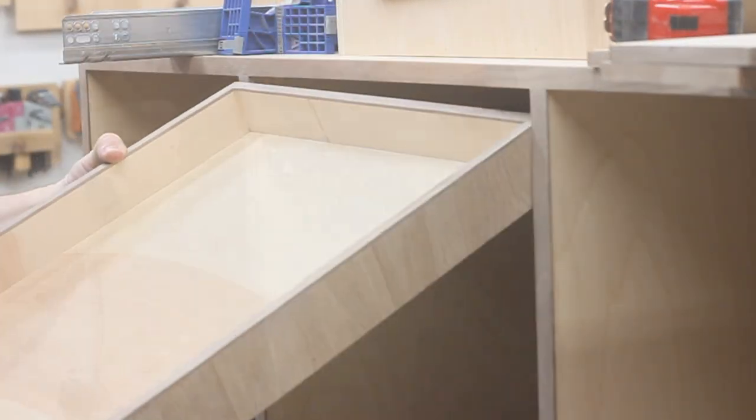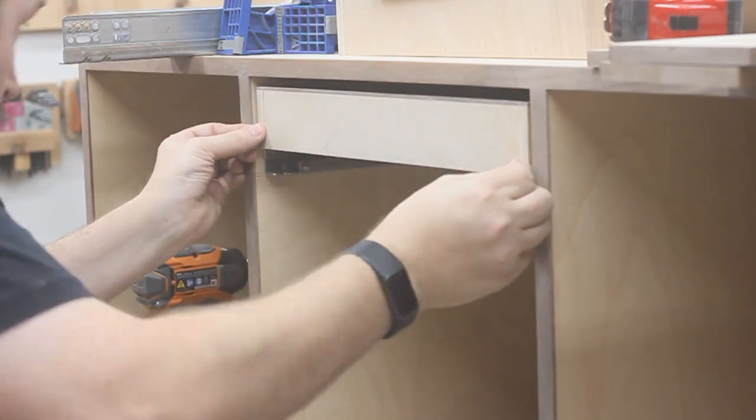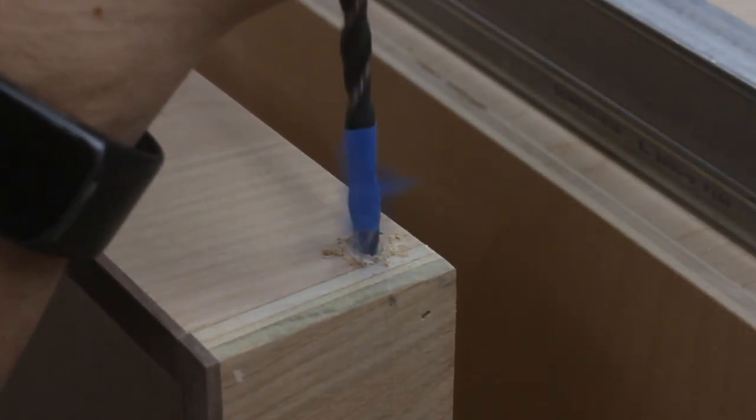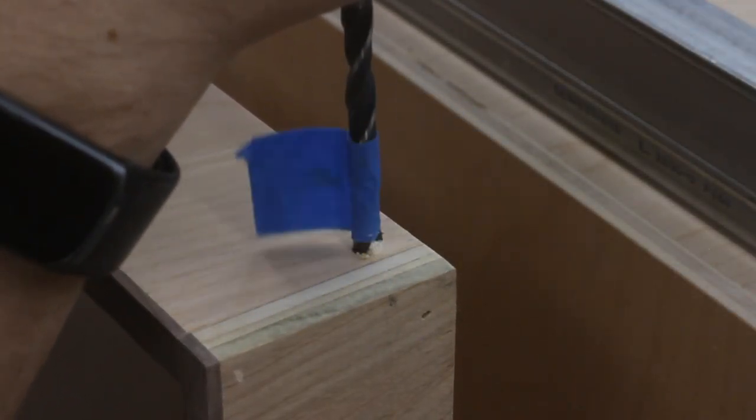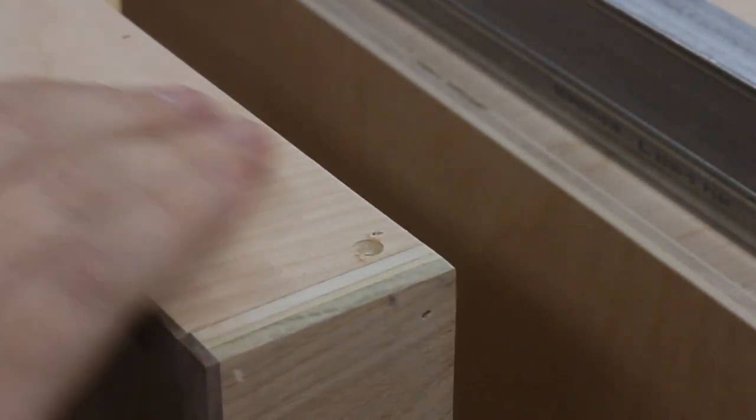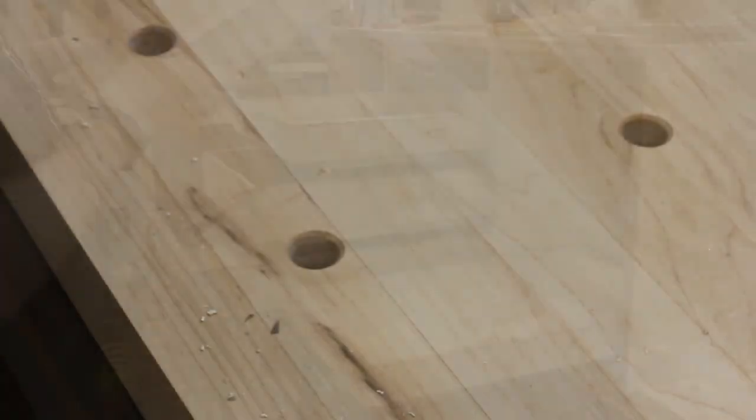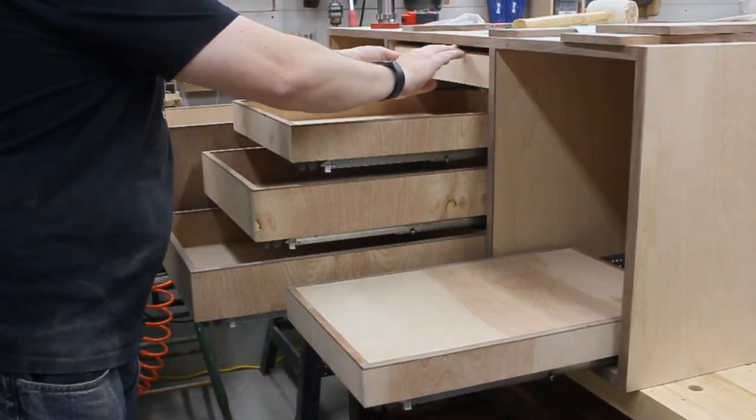Once the slides are installed, I can set the drawer box on top of them and give them some gentle taps with the mallet to mark where I need to drill for the locking pins that are in the back. Being careful not to drill all the way through, I make a couple holes for those. Install the clips on the front, and then I can slide it into place and try them all out.